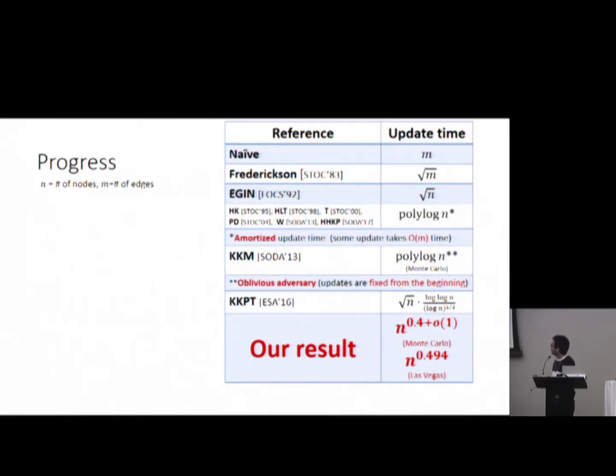We improve it to n to the 0.4 using randomization, worst case time again, adaptive adversary. And I just want to mention in the next talk, Christian Wulff-Nilsen also has a similar kind of improvement, but for the harder problem. He will talk about it. So this is our result.